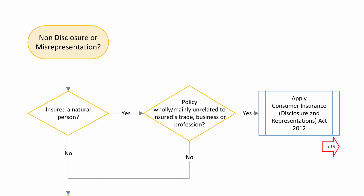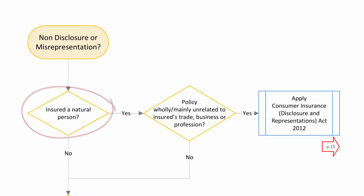The Act only applies to non-disclosure and misrepresentation in relation to non-consumer policies. That is why the initial group of questions are really a reminder to check whether you are dealing with a consumer claim. The first question is: is the insured a natural person? This is asking whether the insured is a company or other form of business entity, but not a living and breathing individual. If the insured is not a real person, then follow the no arrow to the next group of questions.